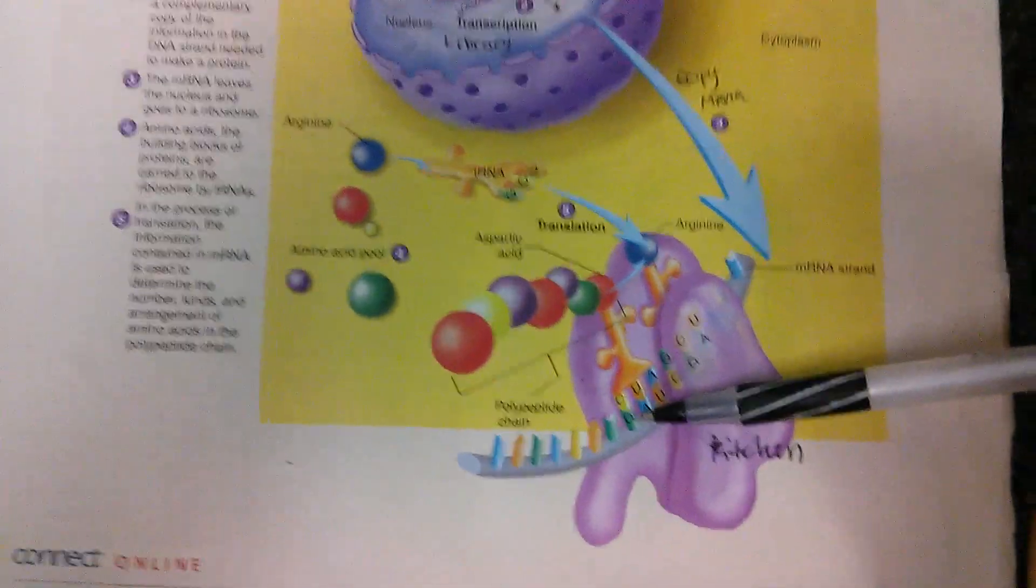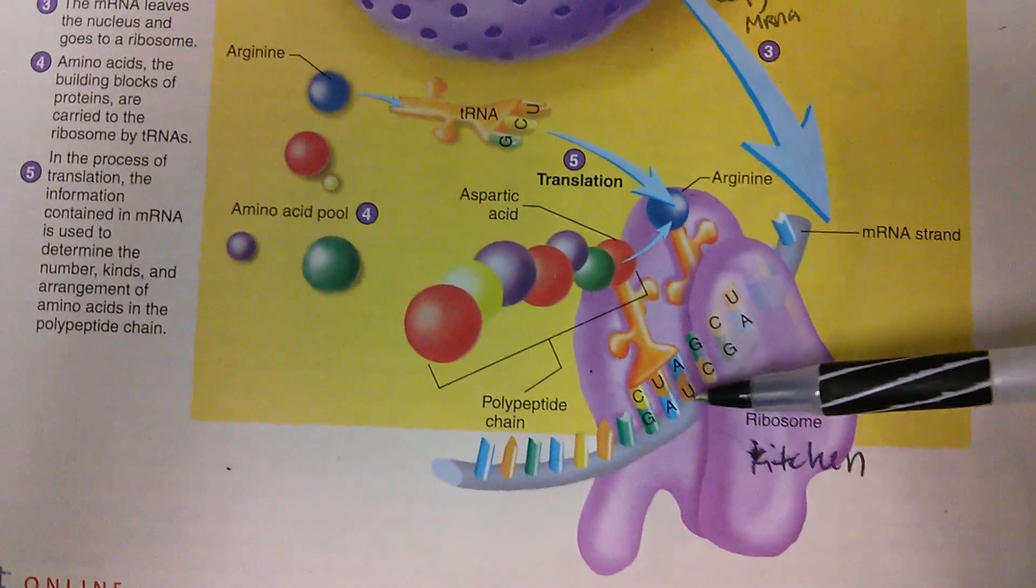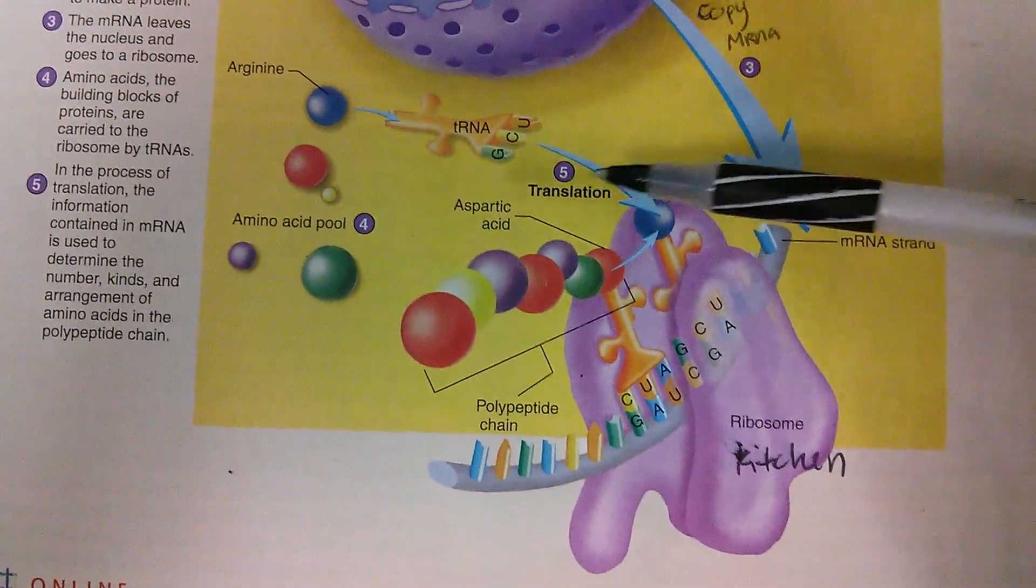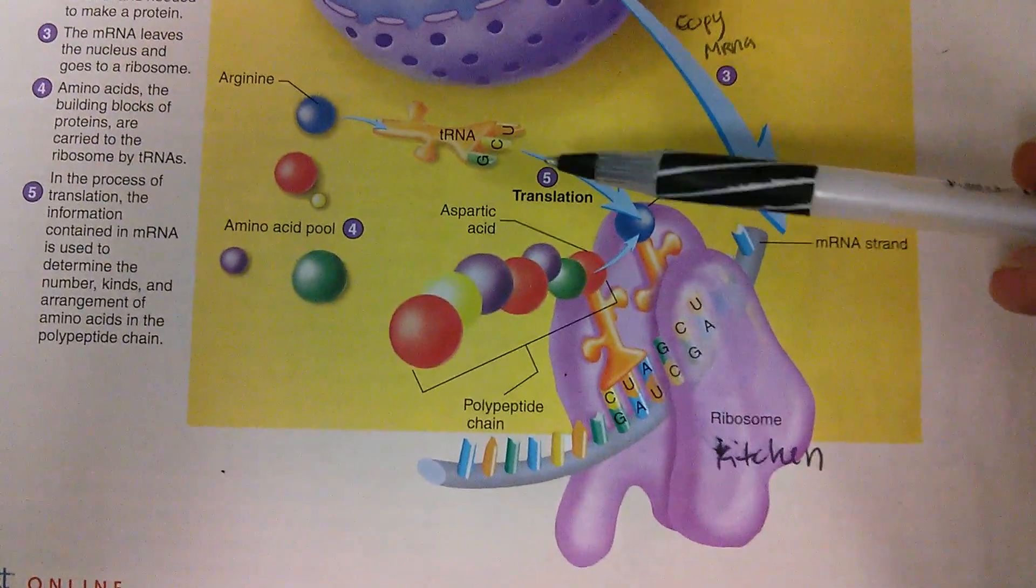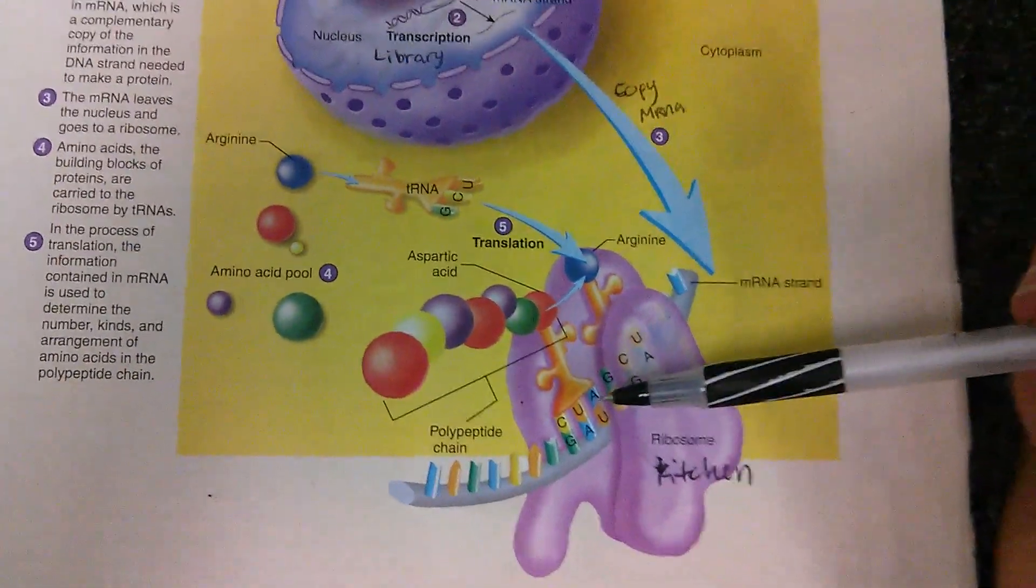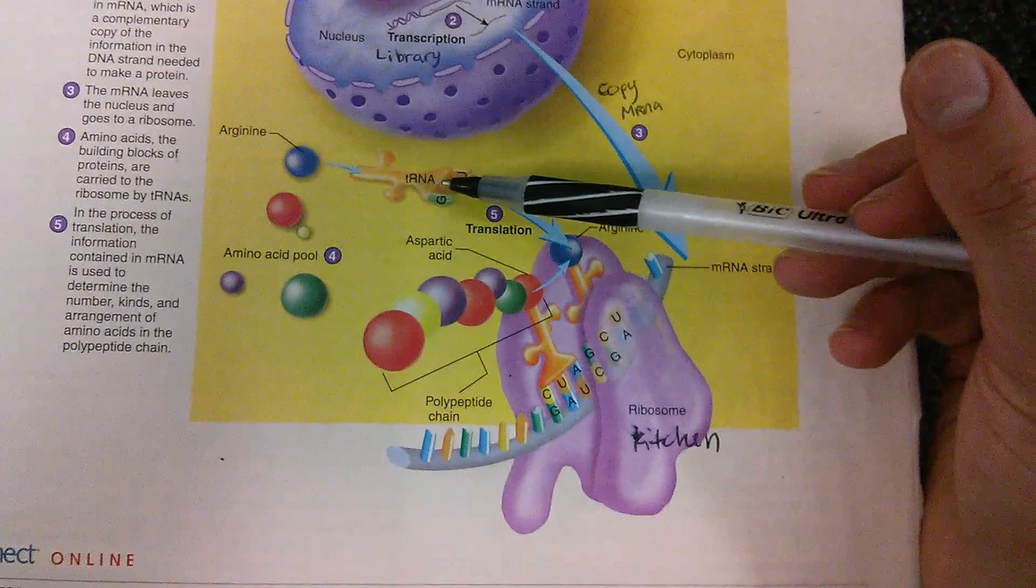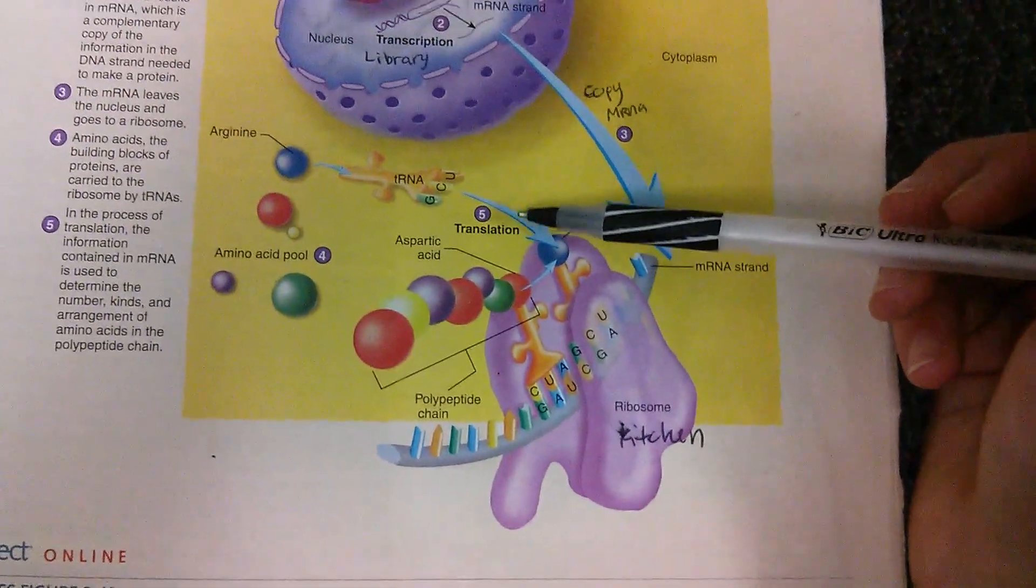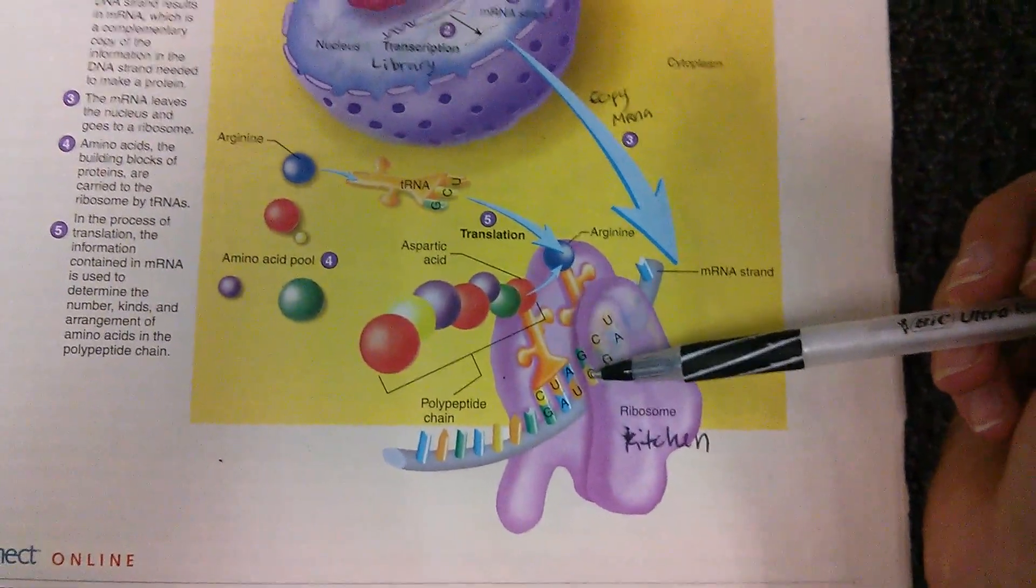And so based off the sequence here, the GAU, CGA, the transfer RNA knows exactly what ingredients he needs to bring to make this recipe. So I like to call the transfer RNA the good husband who goes to the grocery store and gets the ingredients that the wife needs to bake the cake.